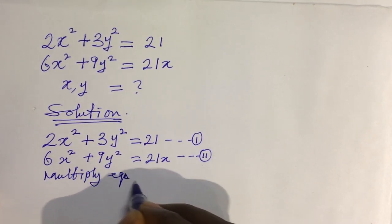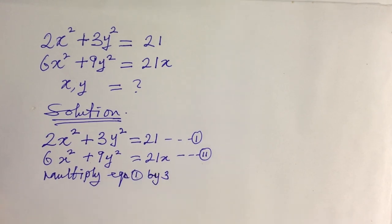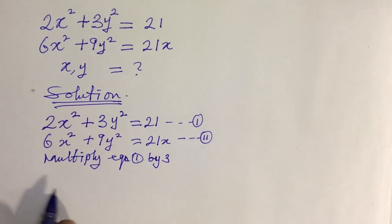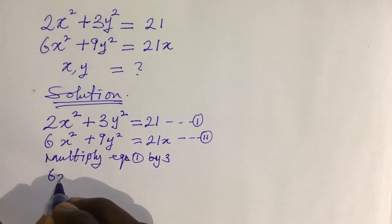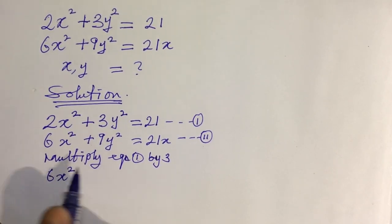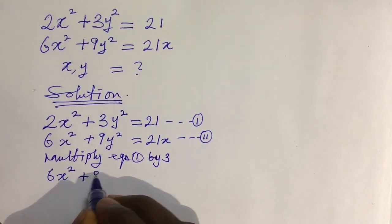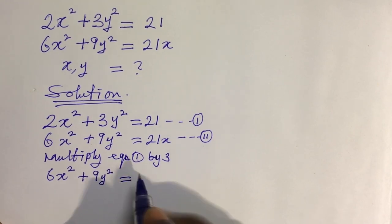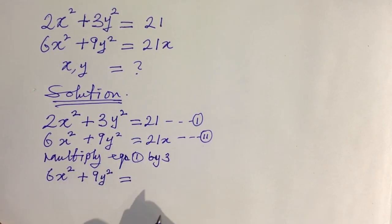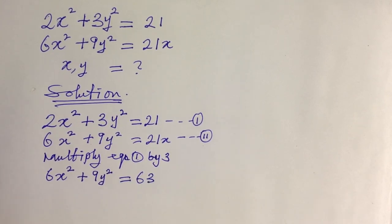Multiplying Equation 1 by 3, it becomes: 6x² + 9y² = 63. Equation 2 remains the same: 6x² + 9y² = 21x.